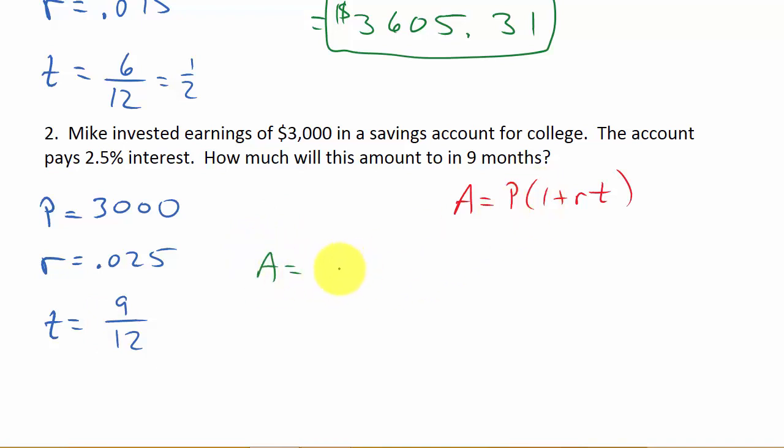So we get A equals P, which is 3,000, times 1 plus R, 0.025, times, and then the nine over 12.